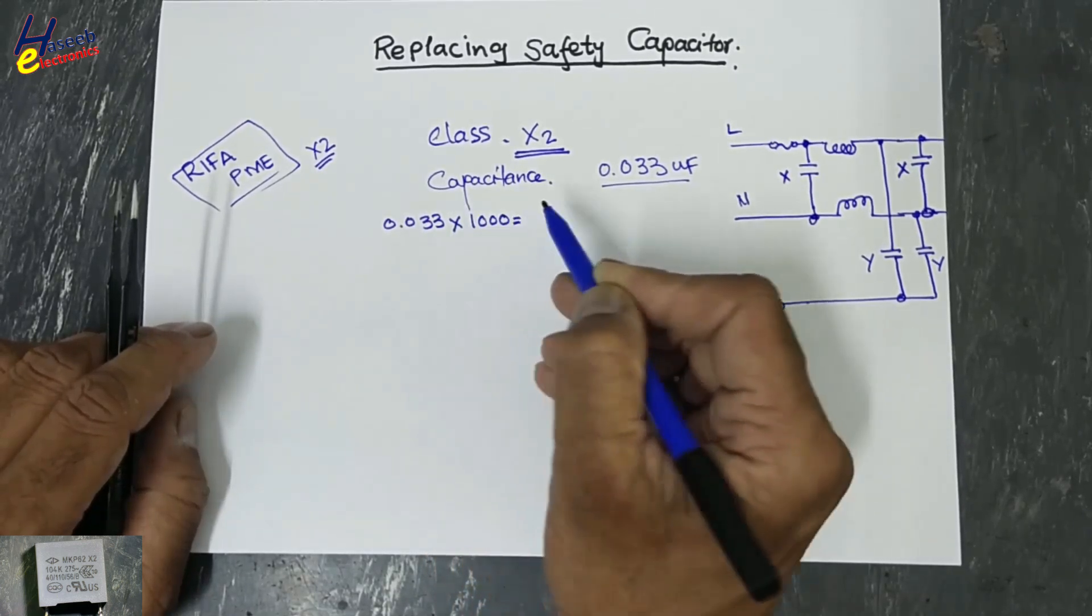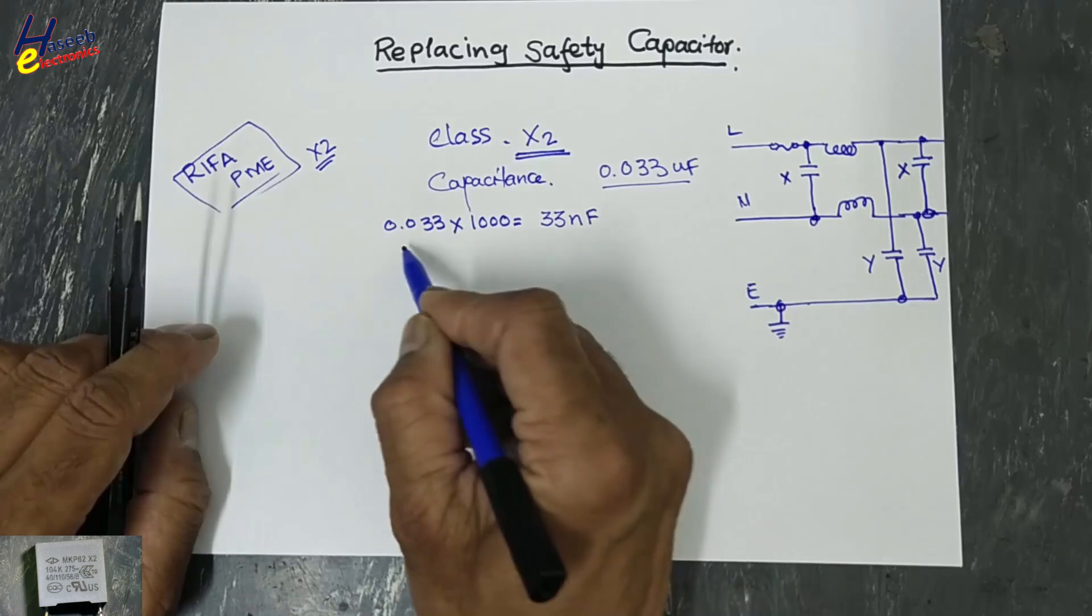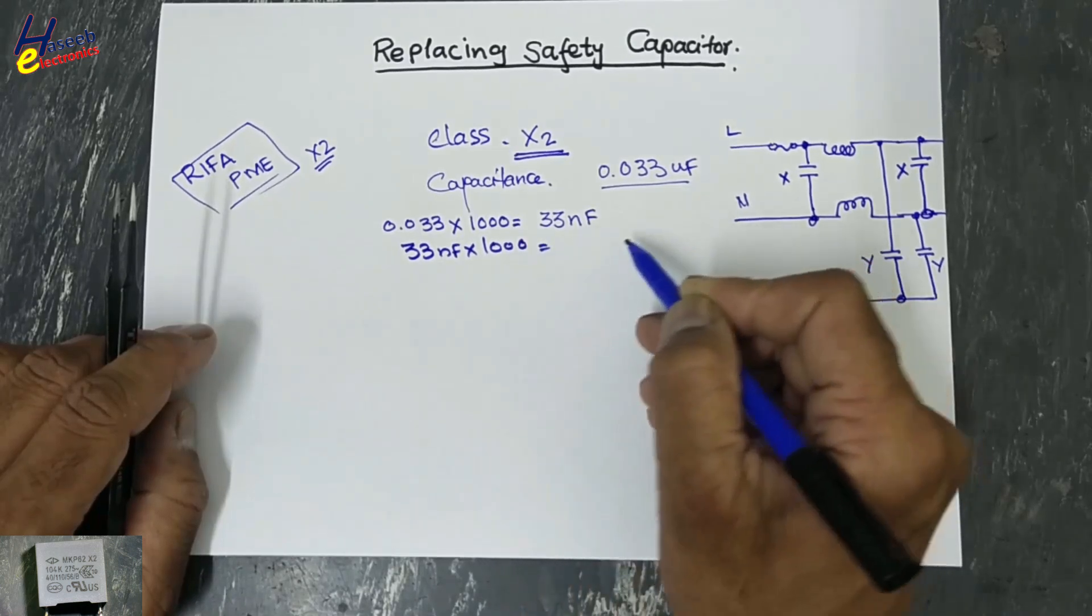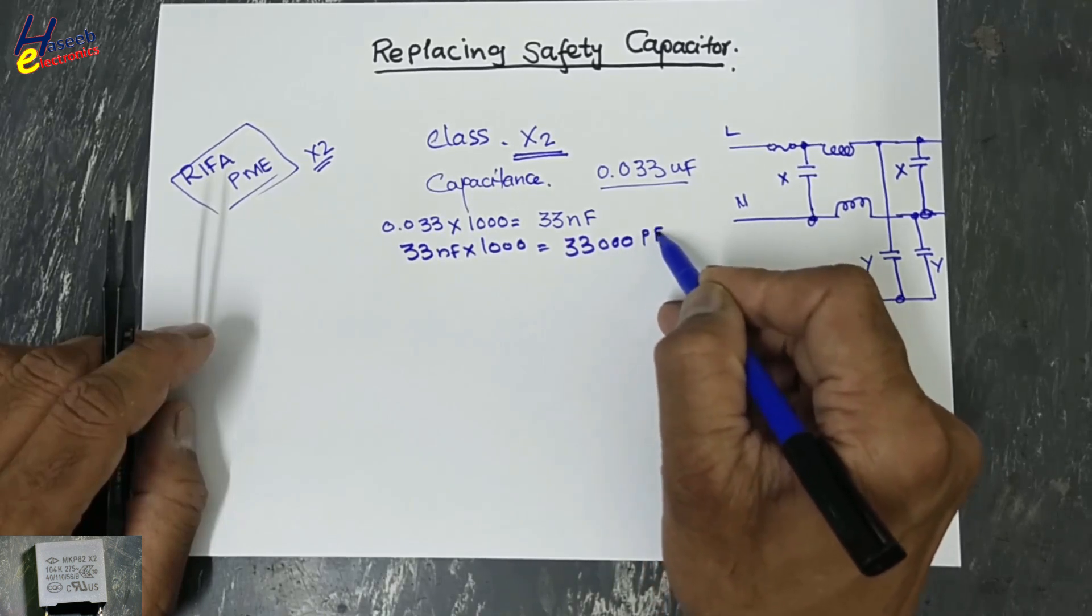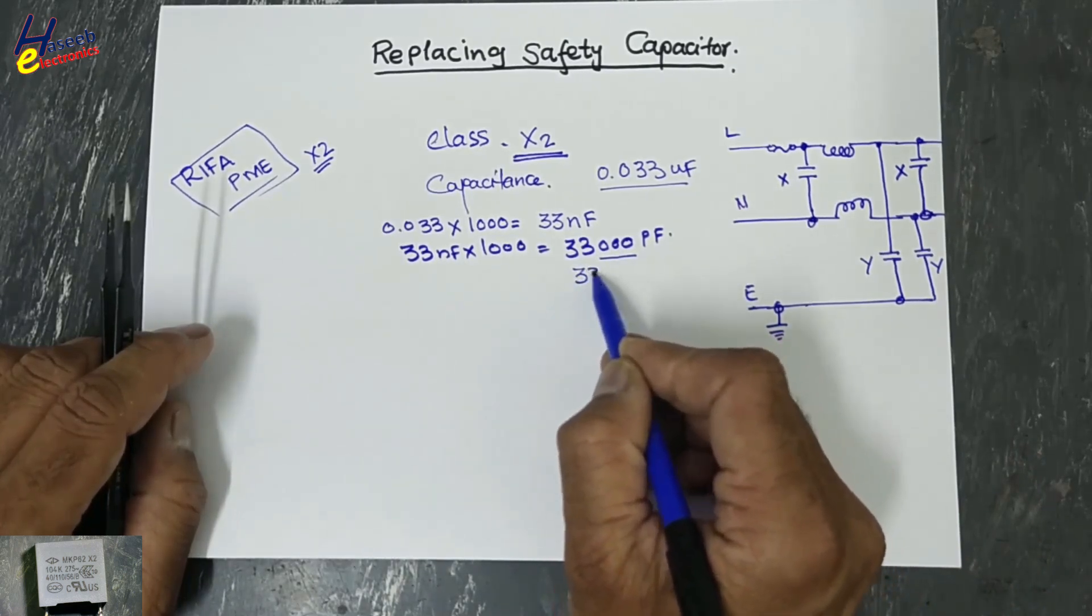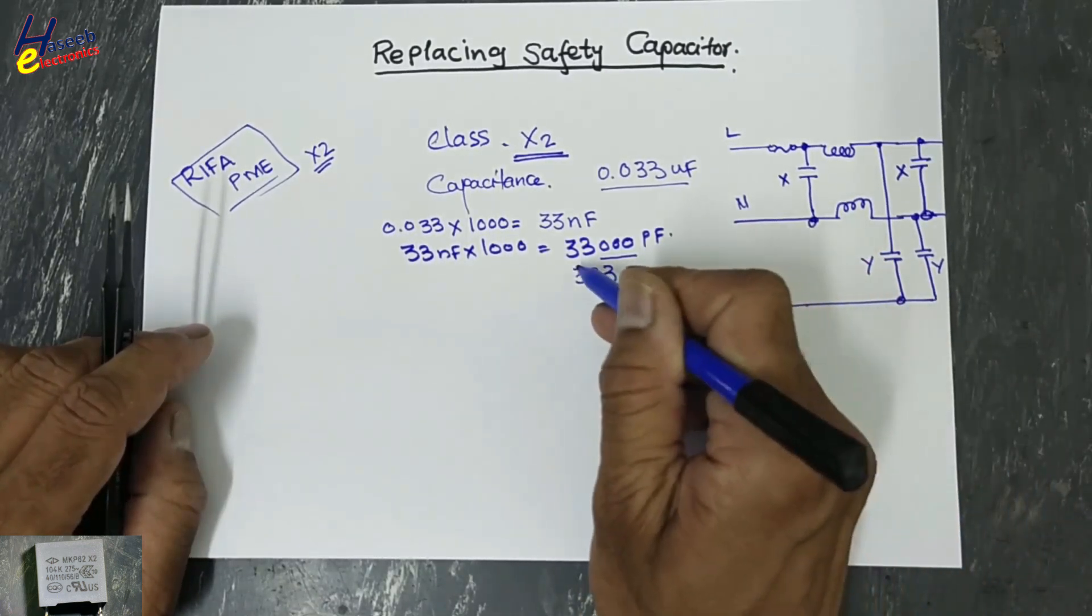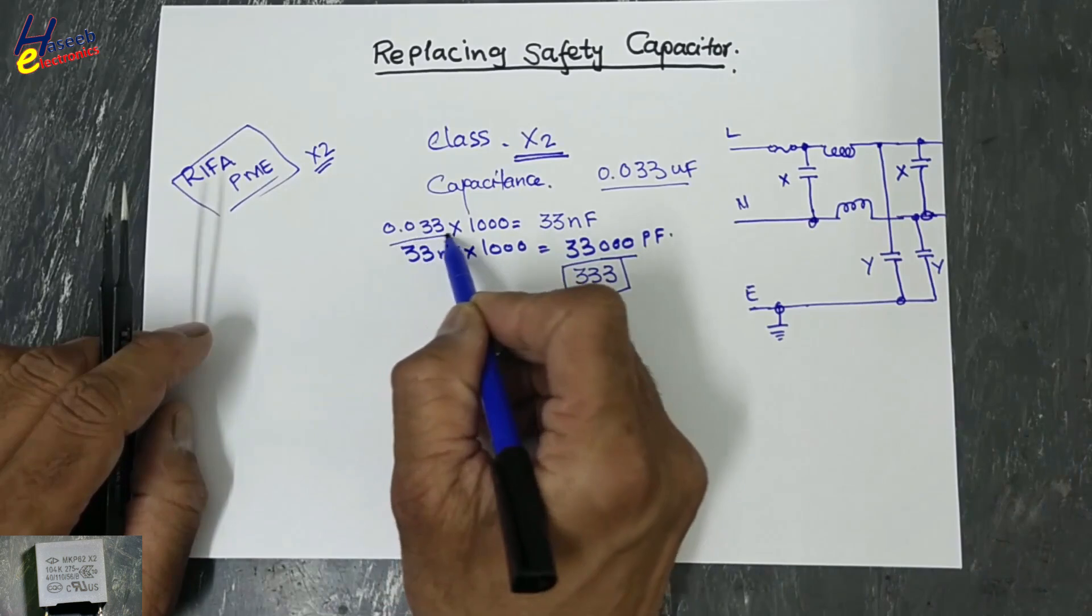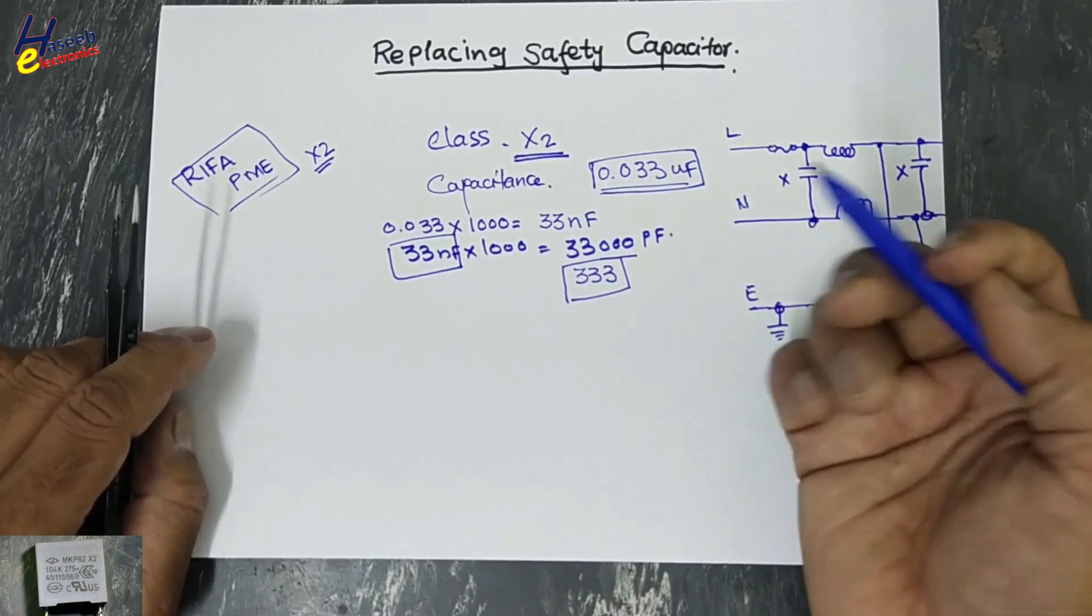Now 33 nanofarad multiply with 1000. The number of zeros will be used as a code: 3 zeros, so 333. Now we need this code if we have a coded capacitor. That time we will use this capacitor or we will use this value. Any value available here will be used as a replacement.